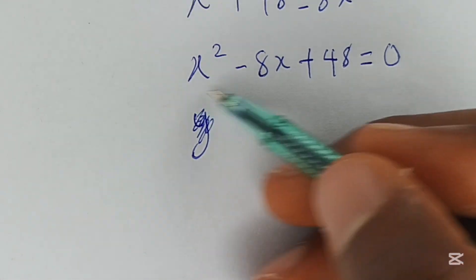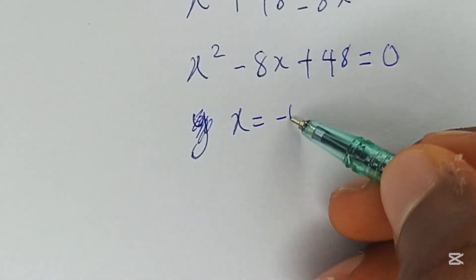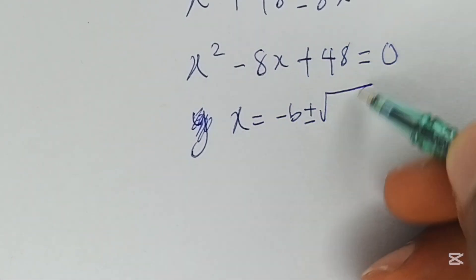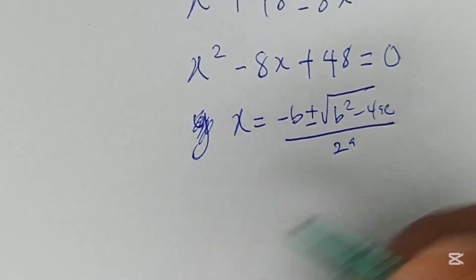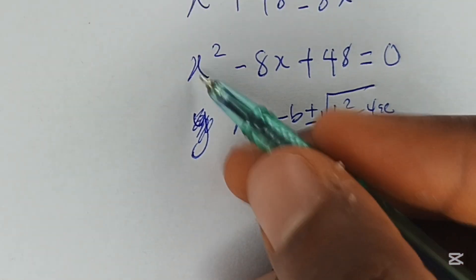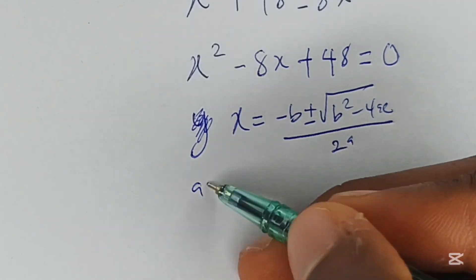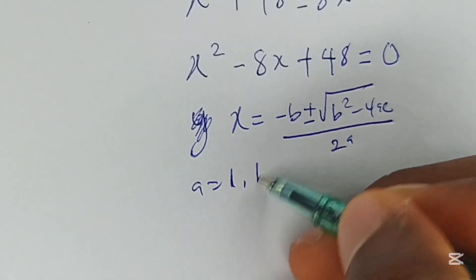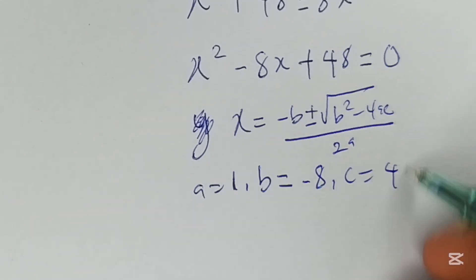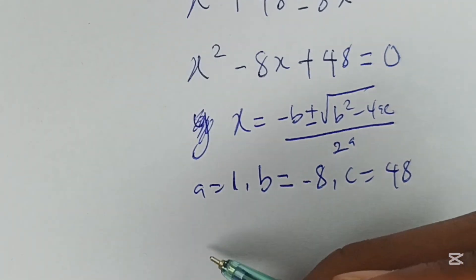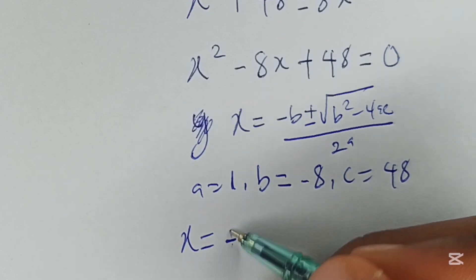Moving on, using the quadratic formula, which states that x equals negative b plus or minus the square root of b squared minus 4ac, all over 2a. To solve this, we identify a is equal to 1, b is equal to negative 8, and c is equal to 48.